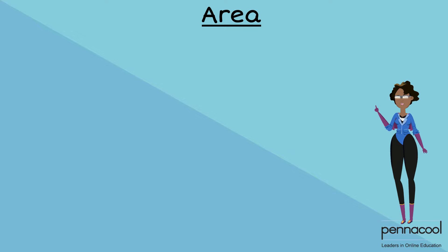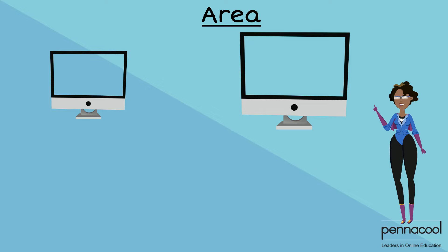Area, simply put, is how we measure the size of a surface. For example, think about TVs or monitors. The bigger the surface of the monitor, the greater its area.